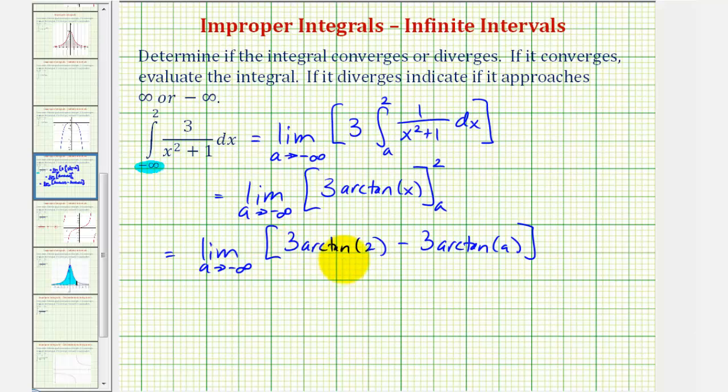And now to evaluate this limit, notice how this first term is not affected by a, so the limit is going to be equal to three arctangent two, and then minus three arctangent a, as a approaches negative infinity. To evaluate arctangent a as a approaches negative infinity, we're trying to find an angle that has a tangent function value that would be approaching negative infinity. So to do this, let's analyze the graph of the tangent function.